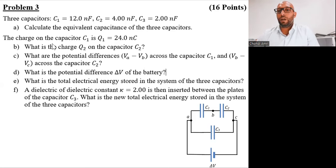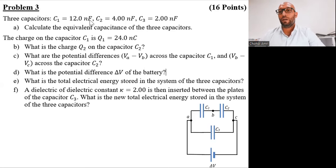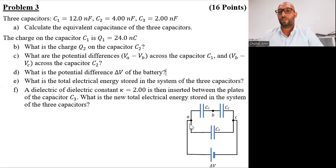As you see in the figure, we have three capacitors: C1 equals 12 nanofarad, C2 equals 4 nanofarad, and C3 equals 2 nanofarad connected as shown. Calculate the equivalent capacitance of the three capacitors.